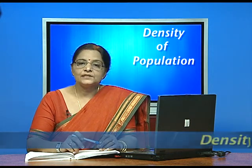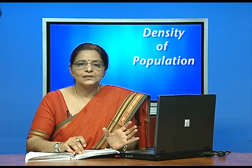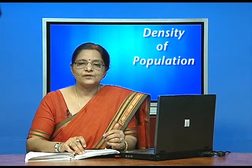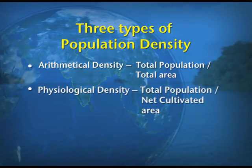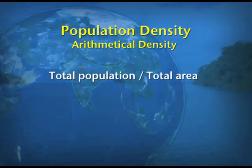Now we take up the different types of population density. We have already discussed the simple definition: persons per square kilometer. There are three types: the first is arithmetical density, the second is physiological density, and the third is agricultural density. Arithmetical density is calculated as total population divided by total area — this is the normal density of population as we discussed earlier.